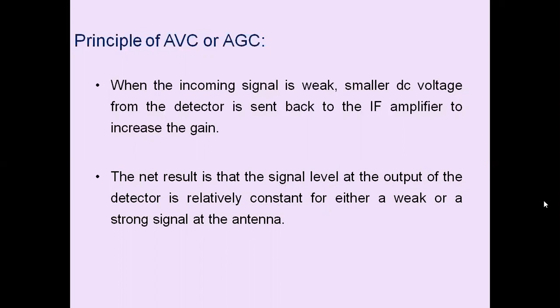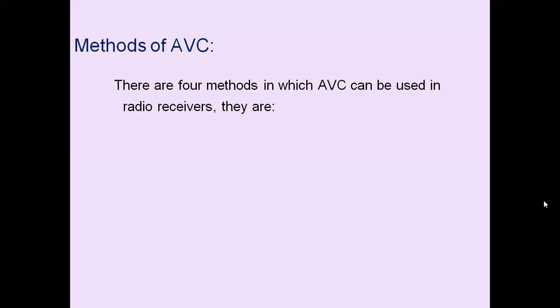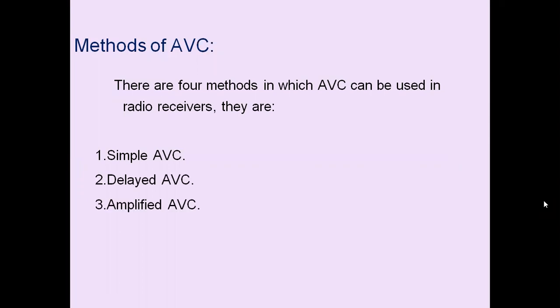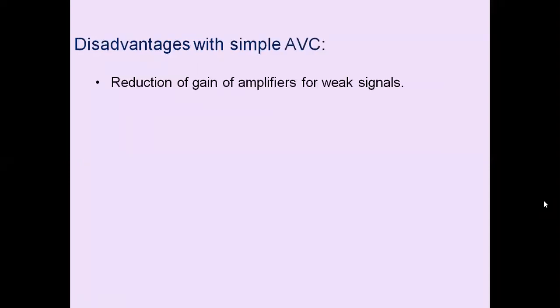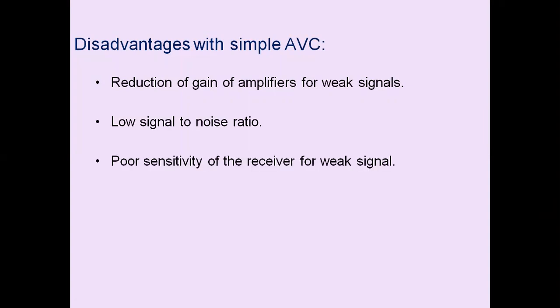There are four methods of achieving AGC: simple AGC, delayed AGC, amplified AGC, and amplified delayed AGC. The disadvantages of simple AGC are: reduction of gain for weak signals, low signal-to-noise ratio, and poor sensitivity for weak signals.